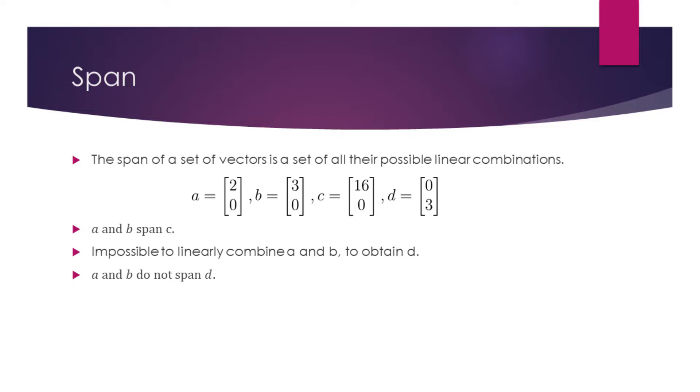The span of a set of vectors is a set of all their possible linear combinations. From the previous example, we saw that it is possible to obtain C by linearly combining A and B. This means that A and B span C.